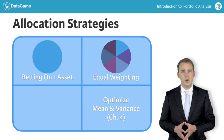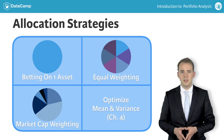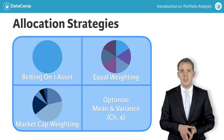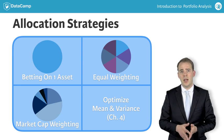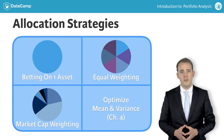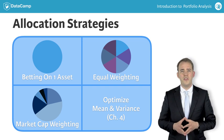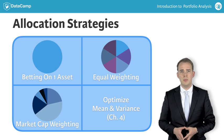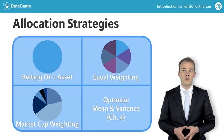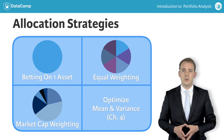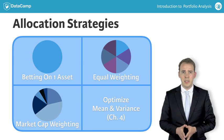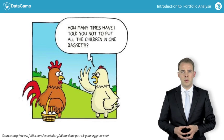Another popular approach is to set weights proportional to the market value of the asset, which implies over-weighting stocks of big firms and underweighting stocks of small firms. These are only a few examples of the large number of possible approaches to define portfolio weights. The important conclusion to remember is that to avoid extreme losses, it is definitely not a good idea to put all your eggs in one basket.